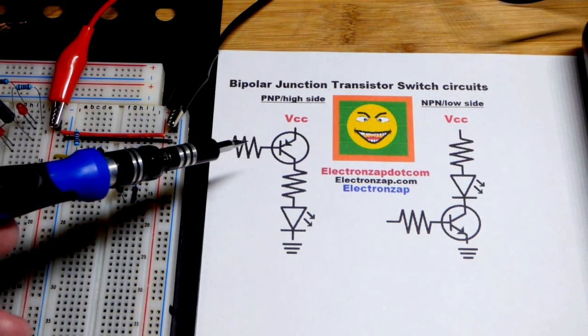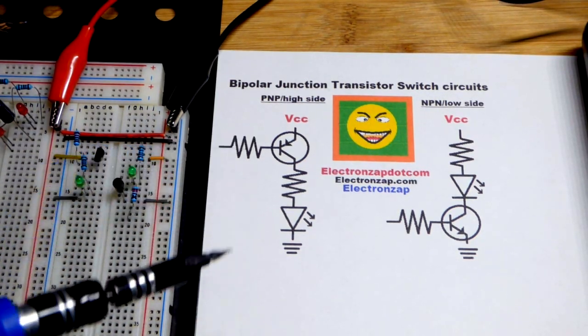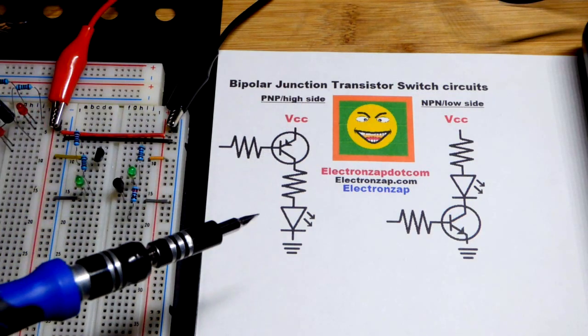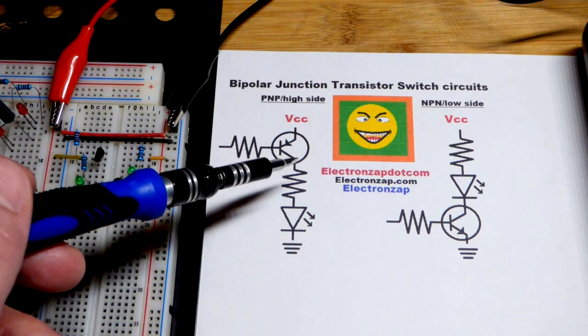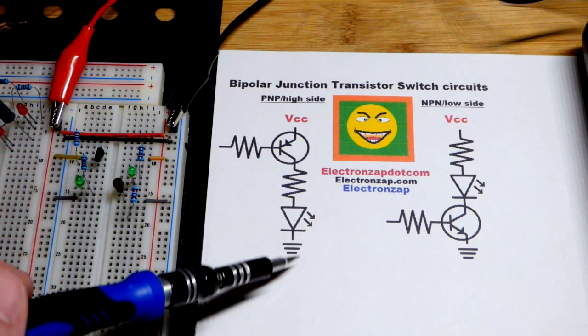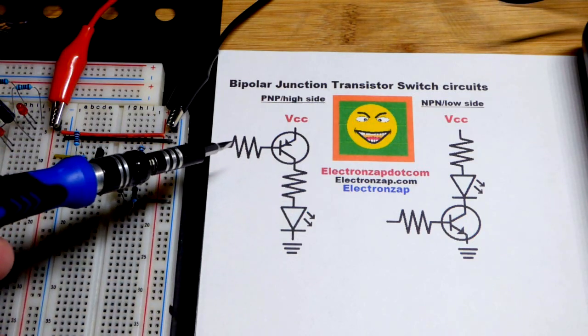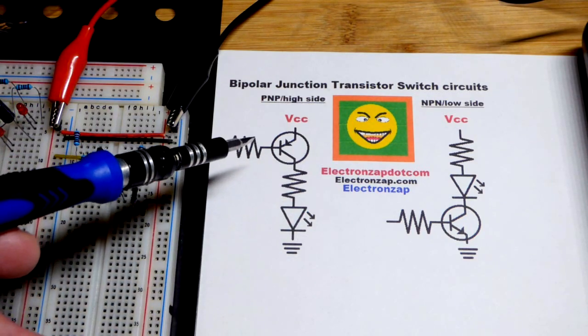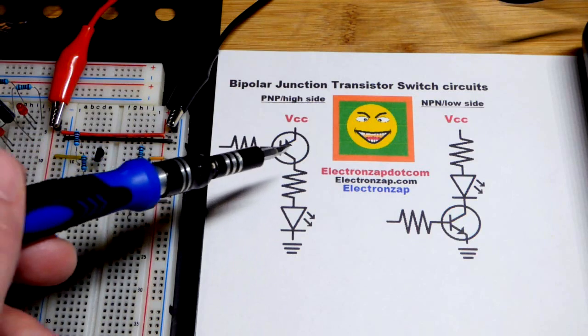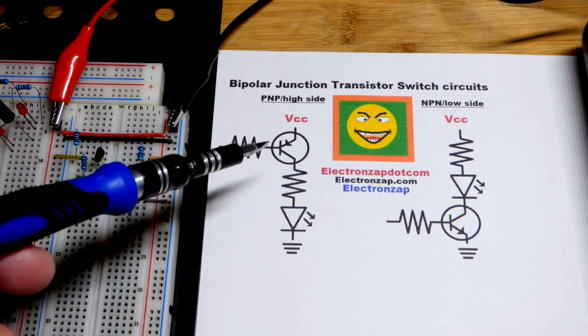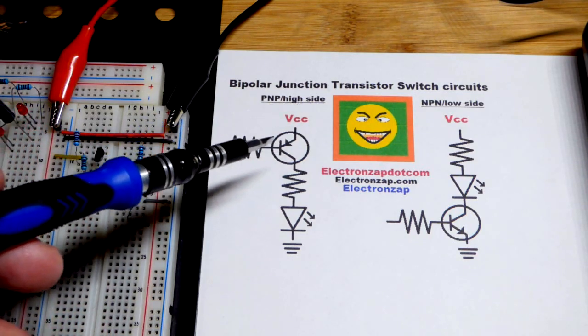We have the same thing with the PNP, except polarities are opposite. So we have the emitter to the positive supply, the load from the collector on the more negative side. We need to get the base side more negative than the emitter side so that a little bit of current can flow through there.